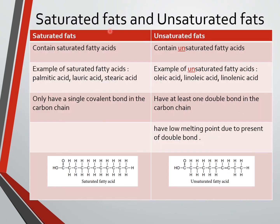The difference between saturated fats and unsaturated fats: saturated fats contain saturated fatty acids with only single bonds between carbon-carbon atoms, while unsaturated fats contain unsaturated fatty acids. Examples of saturated fatty acids are palmitic acid, lauric acid, and stearic acid. Examples of unsaturated fatty acids are oleic acid and linoleic acid.